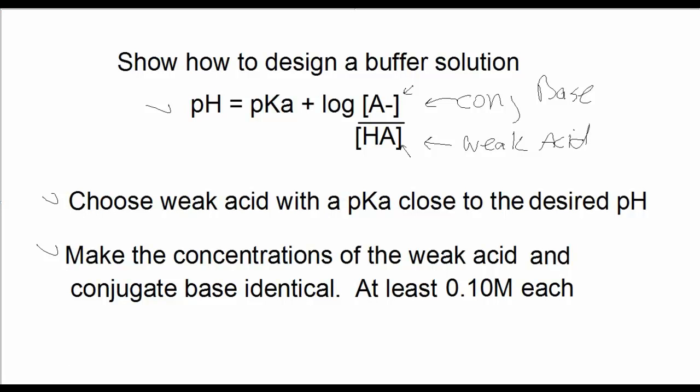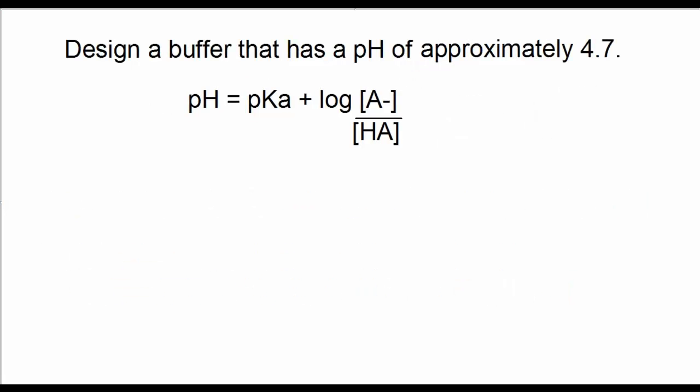So I'll show you an example now. Here's a problem: design a buffer that has a pH of approximately 4.7. One of the criteria mentioned before was to select a weak acid that has a pKa close to the pH of what your buffer should be.